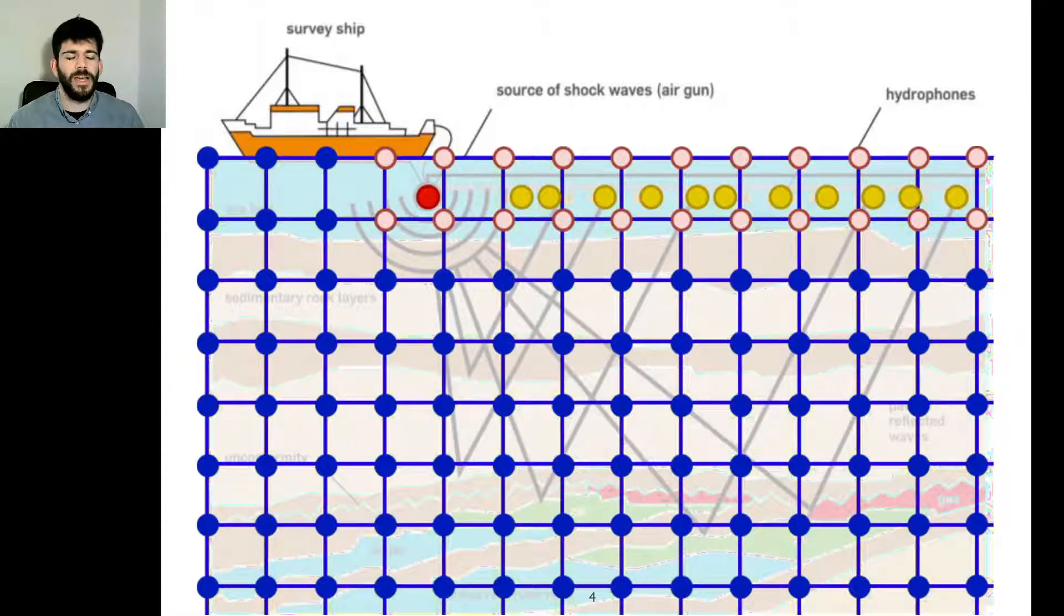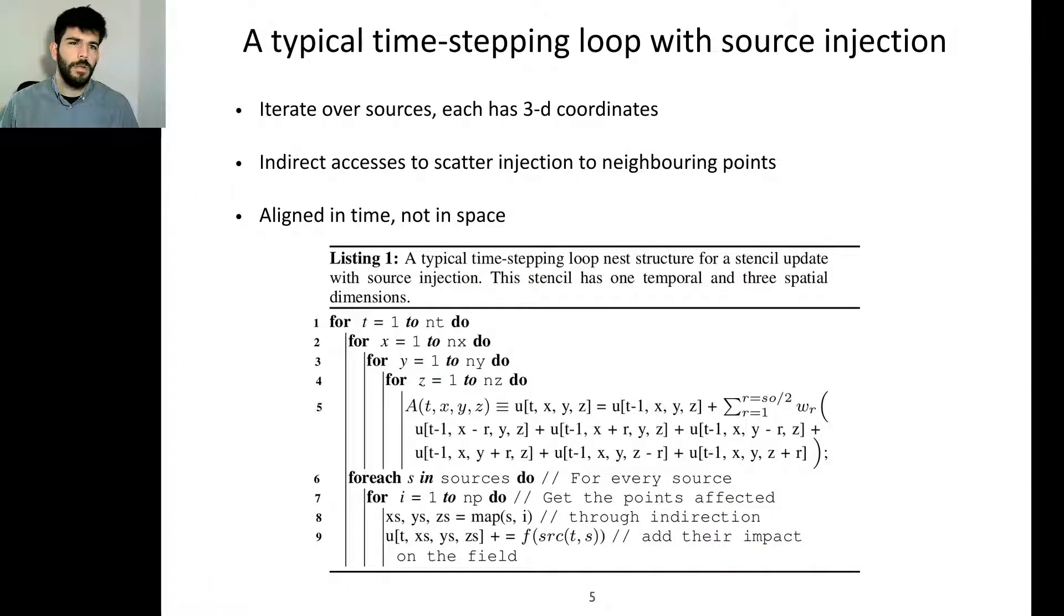You can see here a better look at the off-the-grid nature of these operators. You can see the discretization in a typical 2D example with the red points and yellow points as sources and receivers respectively, as well as the orange points that are affected by those operators. So usually we iterate over the sources which have 3D coordinates in an indirect way to access and scatter the injection to neighboring points. This loop of sources is aligned in time but not in space.